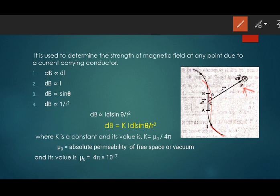They experimented with various factors and concluded that the magnetic field strength dB. Why are we using dB? Because we are considering the length to be dl, an elemental length, a very small length. Since the length is infinitesimally small, the magnetic field strength will also be infinitesimally small.